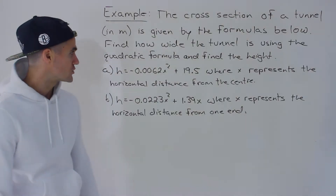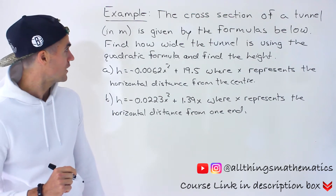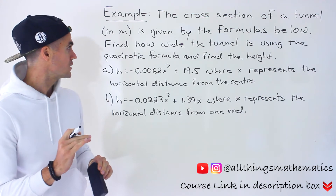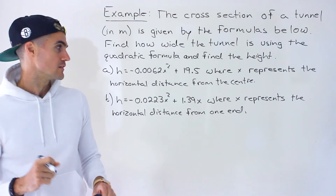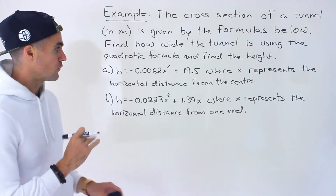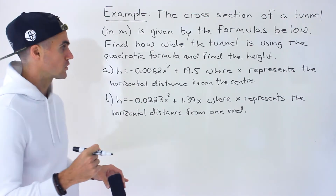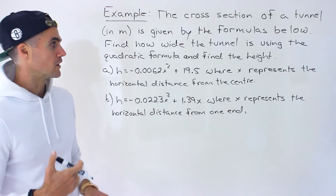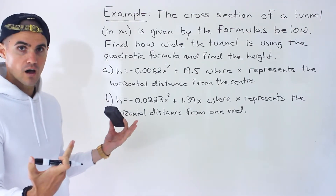Welcome back everyone, Patrick here. Moving on to the next video, still dealing with quadratics. We're told the cross-section of a tunnel in meters is given by two formulas. We're going to have two different scenarios and we have to find how wide the tunnel is using the quadratic formula, and we also have to find the height of it.